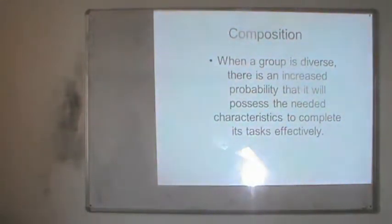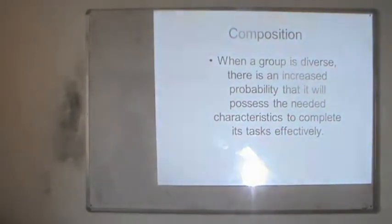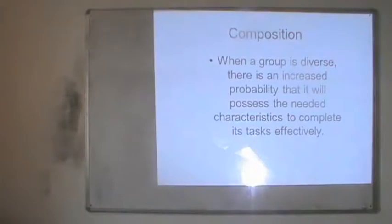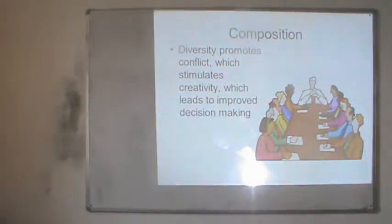Then there is composition. When a group is diverse, there is an increased probability that it will possess the characteristics needed to complete its task effectively. Composition refers to the nature and abilities of group members. If they come from diverse cultures or educational backgrounds, there is more knowledge in the group to perform varied tasks and make quicker decisions. This adds to group effectiveness and also promotes constructive conflict, which stimulates creativity and leads to improved decision making.